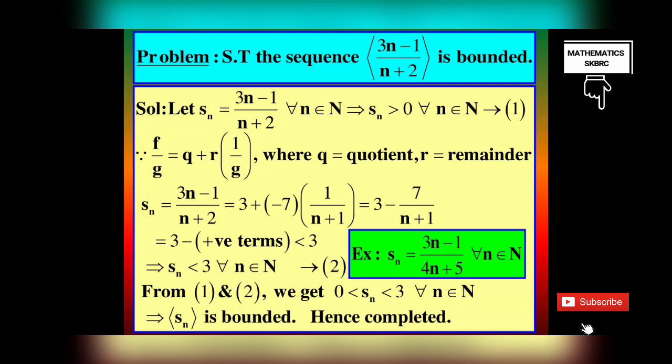Try to solve this similar example: SN = (3N - 1)/(4N + 5) for all N belonging to N.